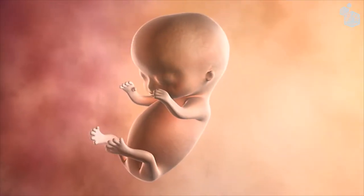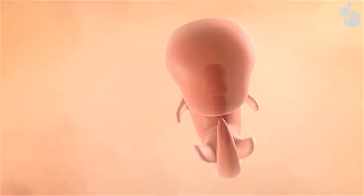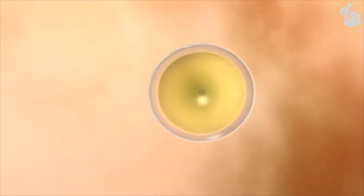The answer lies in the cells. Although animals and plants are formed by billions of cells, in the beginning, we were all a single cell, called a zygote.